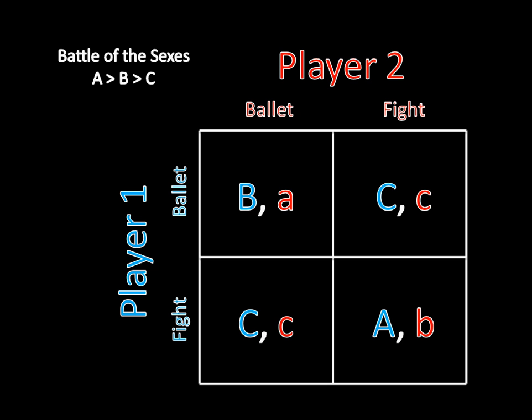So if you're ever given a game that looks like this, how do you solve it? You do it exactly the way you've done it before with actual numbers — you just have to think about it a little more carefully because there's extra logic when dealing with variables as opposed to specific numbers. It's still the case, like in the regular Battle of the Sexes game, that we have two pure strategy Nash equilibria. Ballet-Ballet is a pure strategy Nash equilibrium, and Fight-Fight is a pure strategy Nash equilibrium. Let's show this by looking for profitable deviations.